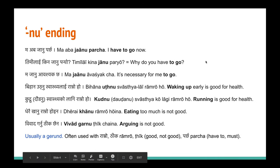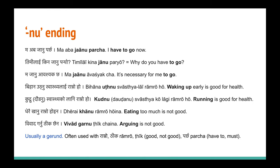The 'nu' ending is very commonly used for gerunds — the '-ing' form of verbs which act as nouns most of the time. For example, 'ma ava janu parcha' means I need to do it, a sense of must. 'Timi lai kina janu paryo' — why do you have to go? 'Ma ava saksa' — the first two cases are about have to or must. The third usage is more like 'my going' or 'me going is necessary' — it's important for somebody.